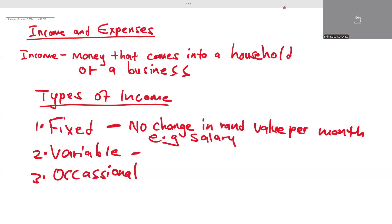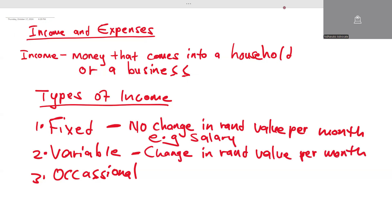Variable income has a change in rand value per month. An example would be money from a business — if you are earning money from sales, it does not mean you are going to receive the same amount next month.